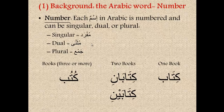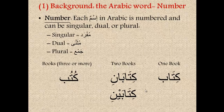Next, we're going to take a look at number. Each ism in Arabic is numbered and can be singular, dual, or plural. Singular or mufrad refers to one — one copy or one instance of something. The dual is two of something and the plural, of course, is three or more. So here we have the word kitab, which means book — specifically, one book. The dual version is kitabani or kitabaini, so we're taking the singular form and adding ani or ayni.